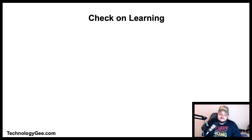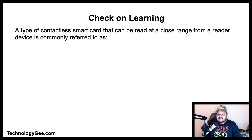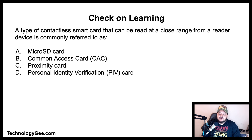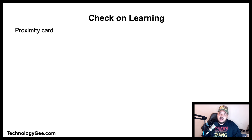The first check-on-learning question: a type of contactless smart card that can be read at close range from a reader device is commonly referred to as what? Is it a micro SD card, a common access card (CAC card), a proximity card, or a personal identity verification card? The correct answer is a proximity card.